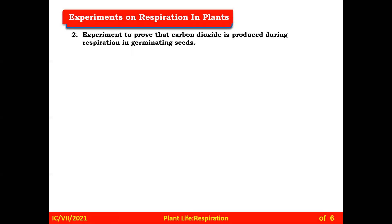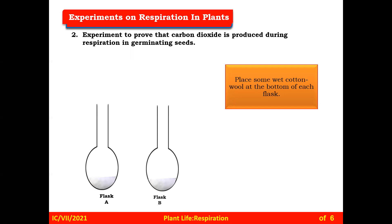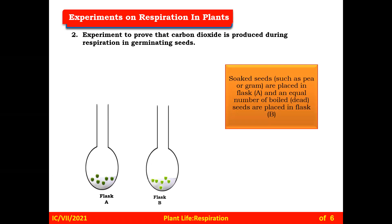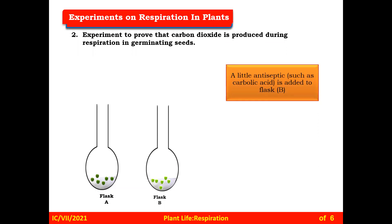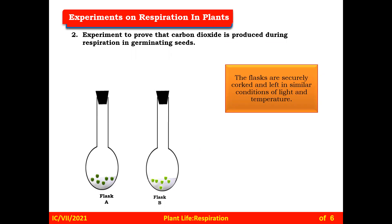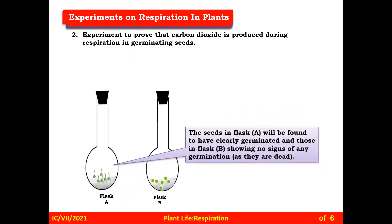Experiment to prove that carbon dioxide is produced during respiration in germinating seeds: take two flasks, label them A and B, and place some wet cotton or wool at the bottom of each flask. Place soaked seeds such as pea or gram in flask A, and an equal number of boiled or dead seeds in flask B. Add a little antiseptic such as carbolic acid to flask B to prevent bacterial growth on the dead seeds, which would otherwise respire and release carbon dioxide. The flasks are securely corked and left under similar conditions of light and temperature. A few days later, the seeds in flask A will have clearly germinated, while those in flask B show no signs of germination as they are dead.